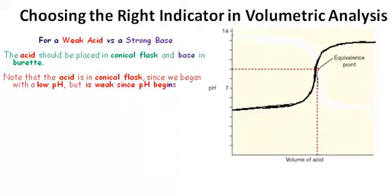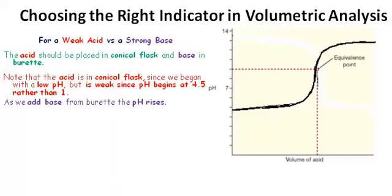Note that the acid is in the conical flask since we've begun with a low pH. But since the pH begins around 4.5 rather than 1, we know that the acid is weak. As we add base from the burette, the pH starts to rise.